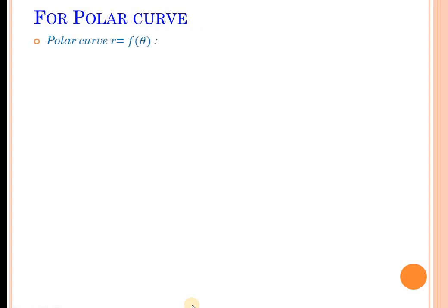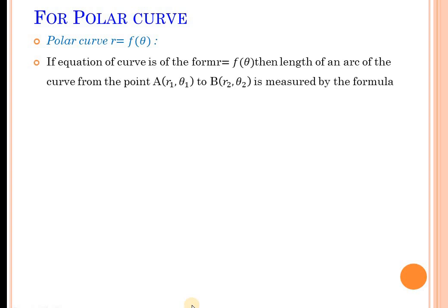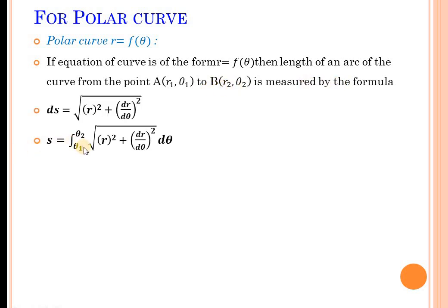For the next type of curve — polar curve — the equation is given as r equals f(θ). We have to find out the length of the curve from point A at (r₁, θ₁) to point B at (r₂, θ₂). The length of the curve is given by the formula: S equals the integration from θ₁ to θ₂ of the square root of r² plus (dr/dθ)² dθ. We find dr/dθ in terms of θ, then compute r² plus (dr/dθ)² and integrate between θ₁ and θ₂.